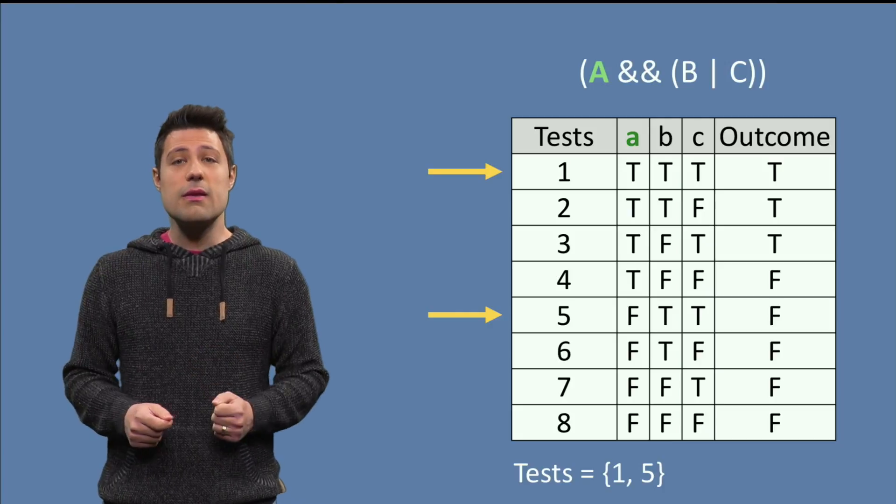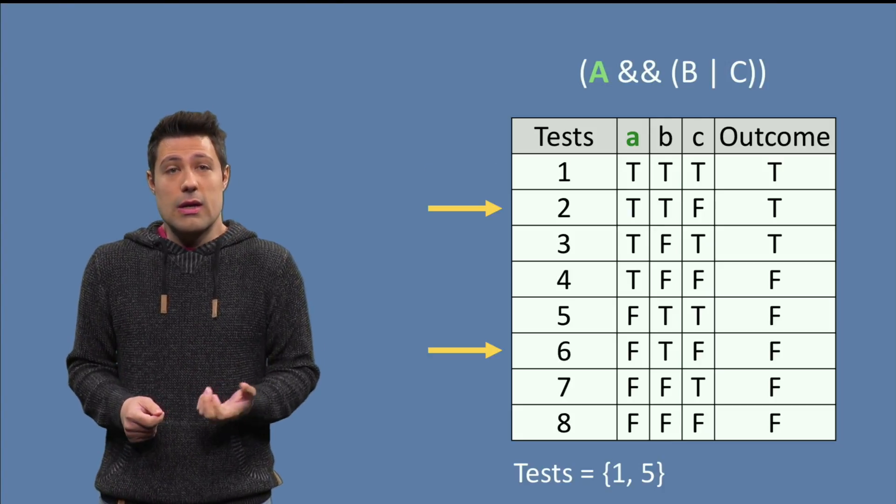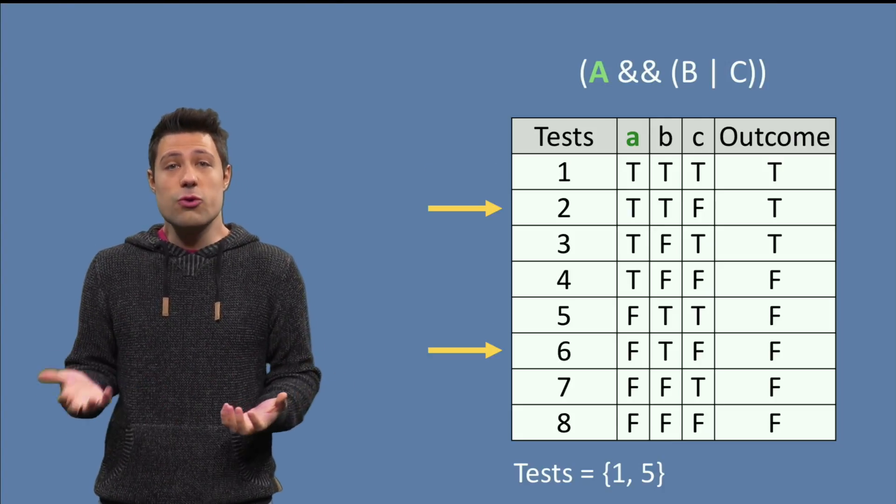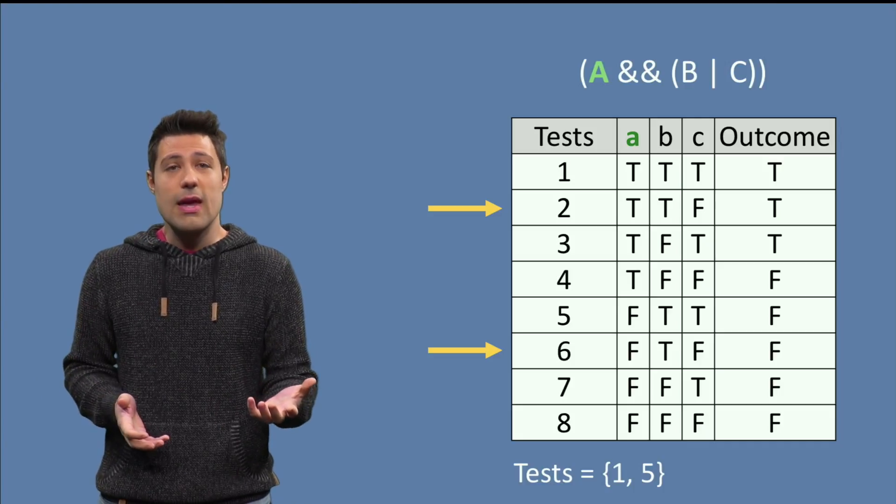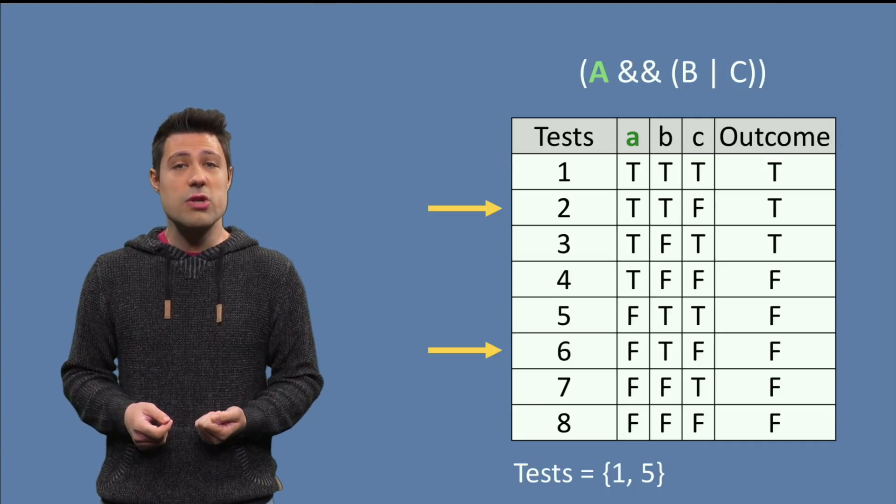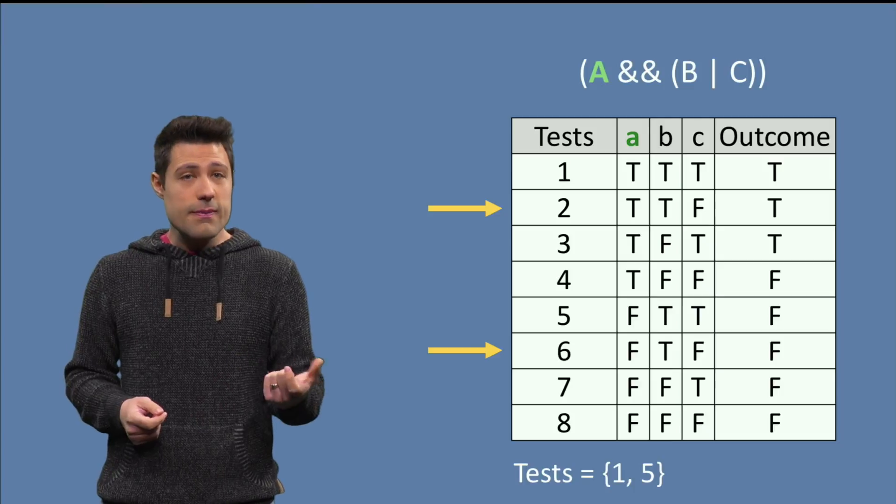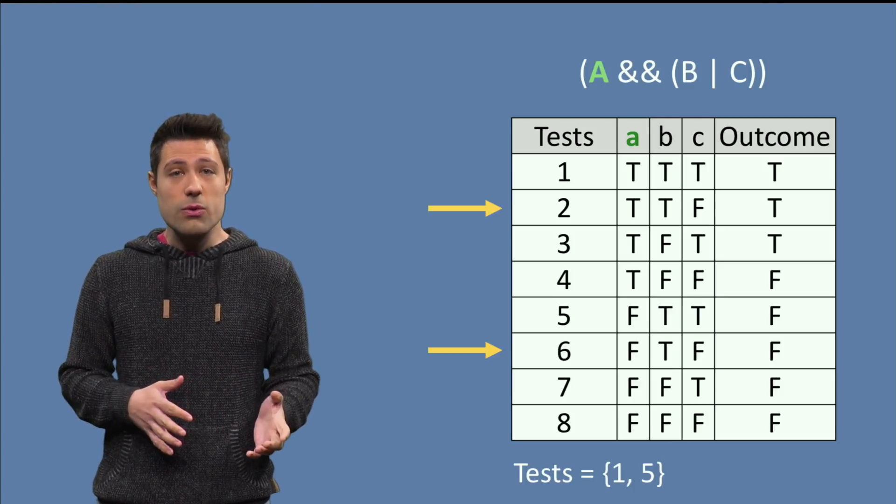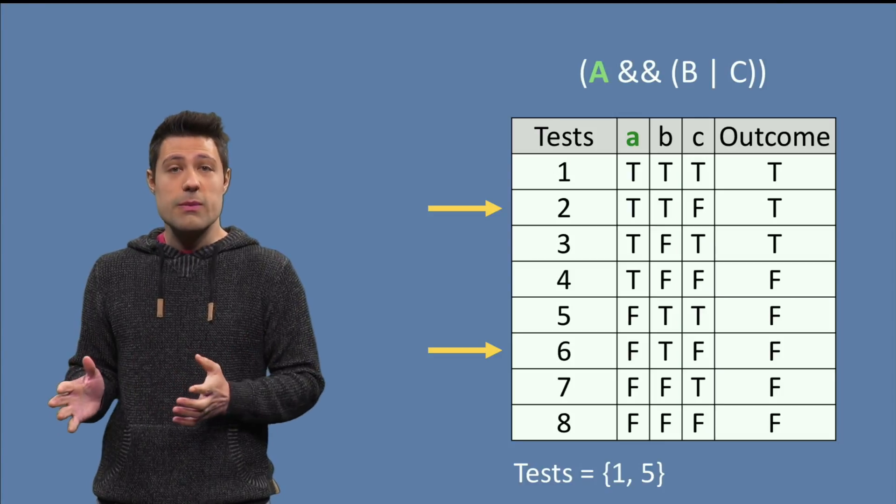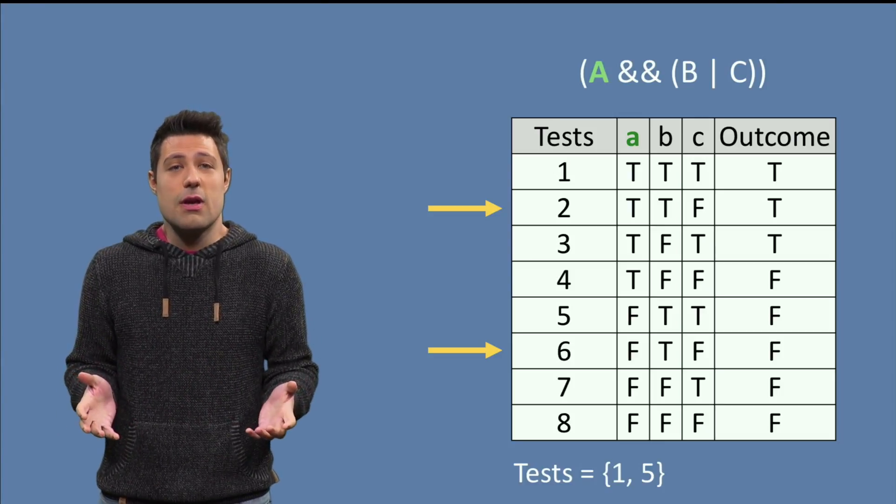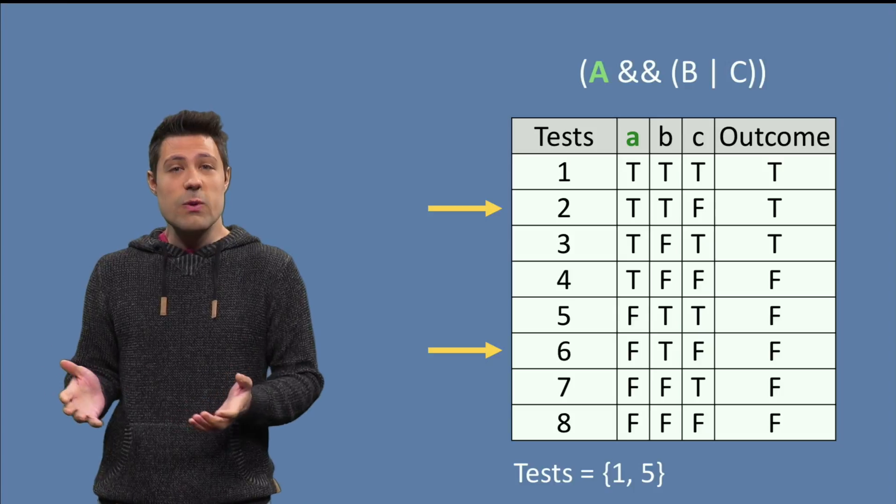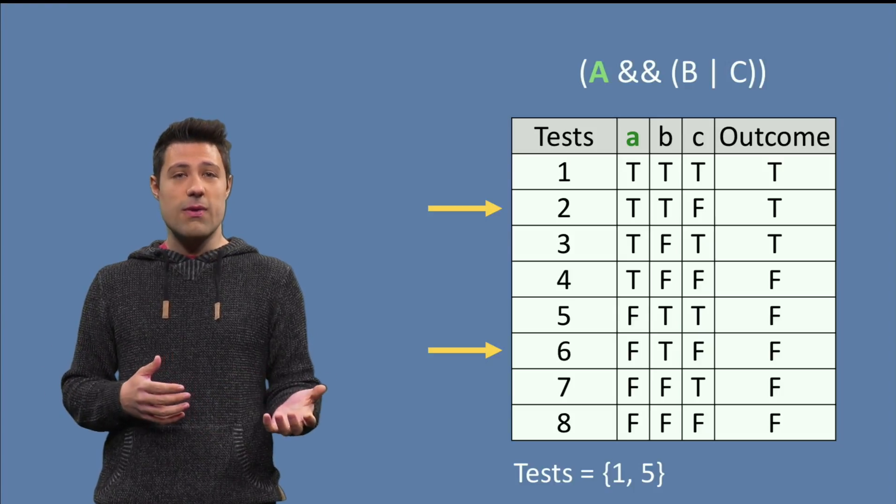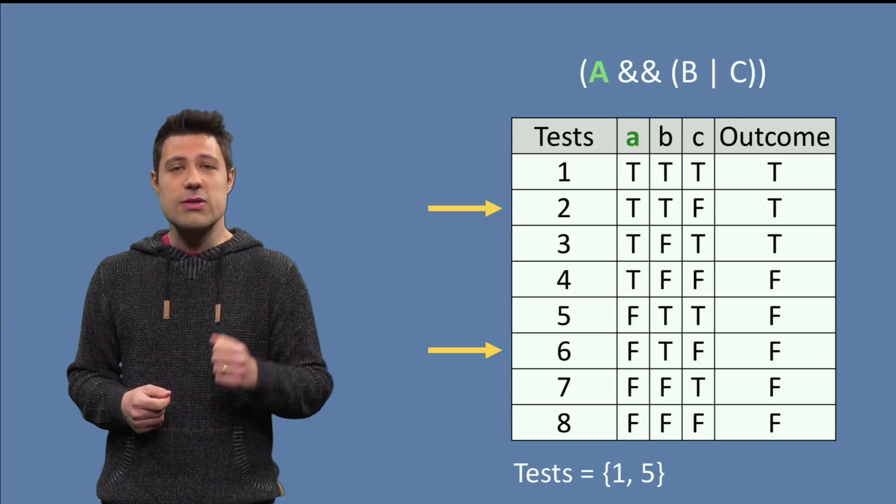Let's now repeat it for row 2, which is A true, B true and C false. Its counterpart is row 6, where A is flipped, false there, B is still true and C is still false. And look at the outcome, they are also different. So, we just found another case in which the system would behave differently if A changes. Let's keep them as well.